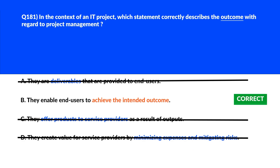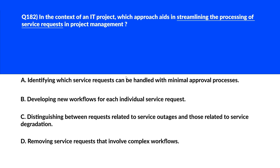We'll lock option B as the right choice. Now we need to streamline the process of service requests. Option A says identify which service requests can be handled with a minimal approval process. Identifying which service requests can be handled with minimal approval helps streamline the fulfillment process by reducing delays — looks good, we'll park this.